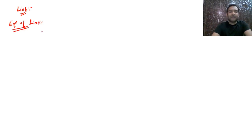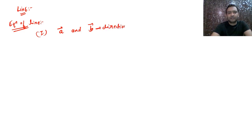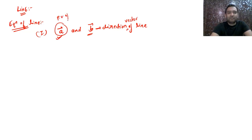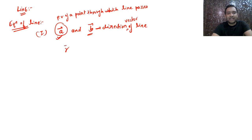The first form: if you are given a point whose position vector is **a** vector, and **b** vector is given as the direction vector of the line — meaning **b** vector is a vector parallel to the given line, and **a** vector represents the position vector of a point through which the line passes — then the equation of this line is: **r** = **a** + λ**b**. This is the vector form.